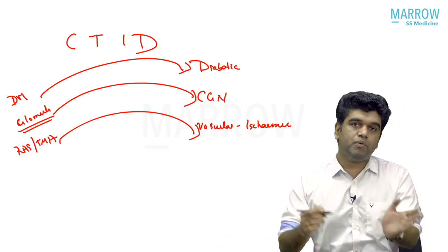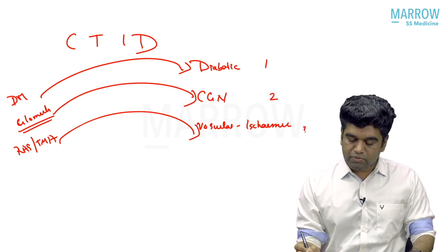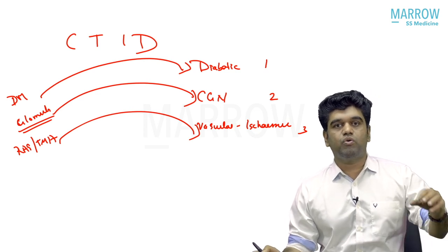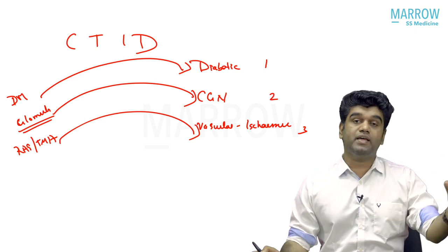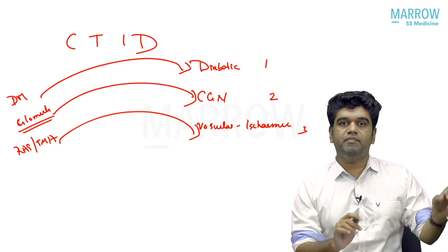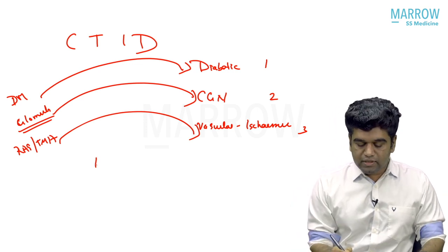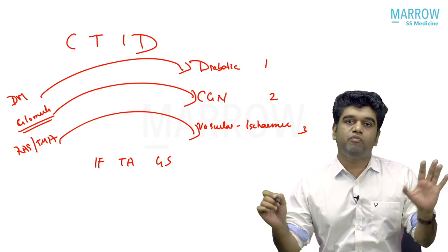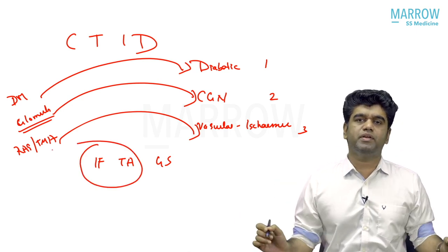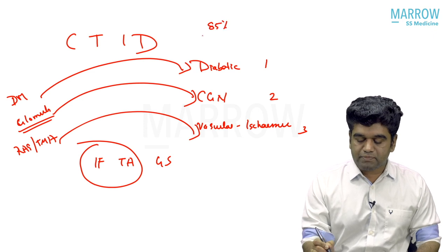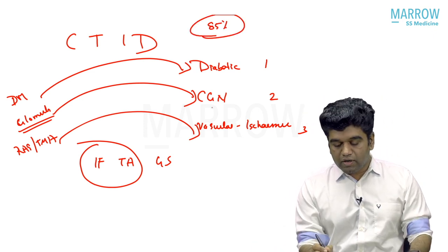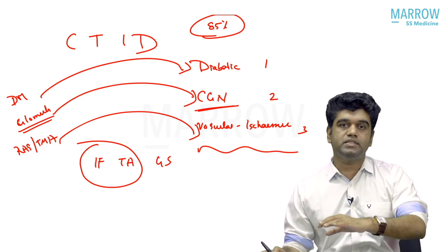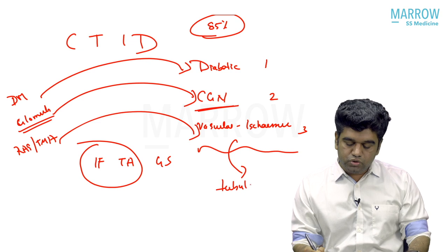These are the top three causes of CKD. Now, 85% of the kidney is made up of tubular interstitium. In simple terms, CKD is defined as a decrease in nephron number. The pathologist uses the term IFTA — interstitial fibrosis and tubular atrophy — which is very important. So even if you have CGN and your glomerulus is sclerosed, you cannot get CKD unless the tubular interstitium is involved. Diabetes, CGN, vascular ischemic — all of these, when they produce CKD, must involve the tubular interstitium.